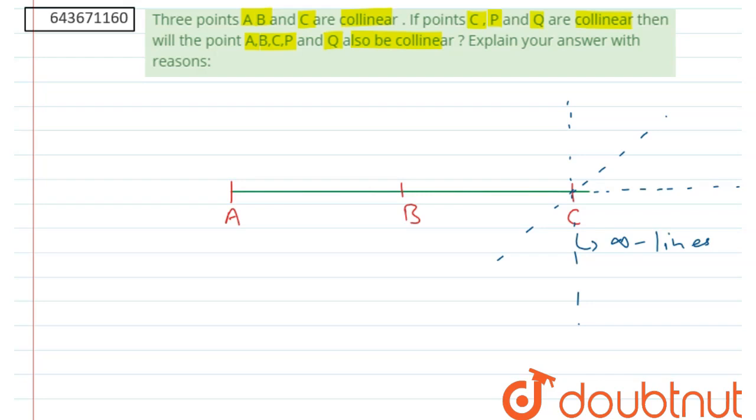So it is not mentioned that C, P, Q are on the same line as A, B, C. So C, P, Q can be any line. Suppose if C, P, Q is this line, then point C will be here, P will be here, Q will be here.